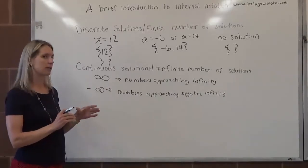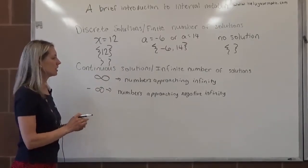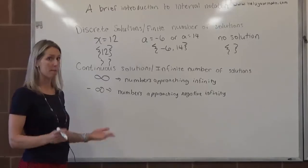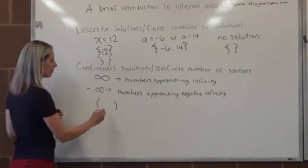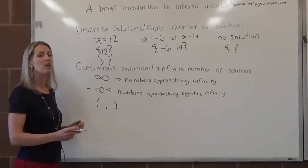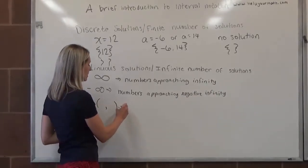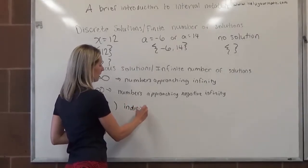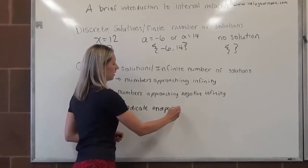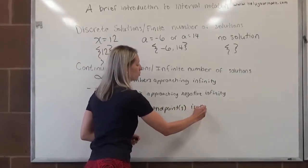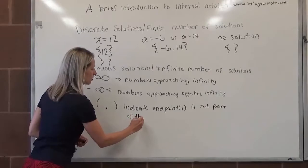When we're talking about continuous solution sets, we're talking about an interval of numbers. For these intervals, we use either parentheses or brackets or a combination. If we use parentheses, we have two numbers separated by a comma within the parentheses. The parentheses indicate that the endpoint is not part of the solution set.